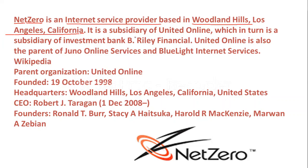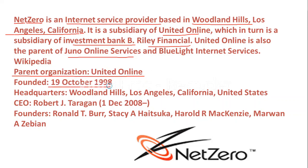Net Zero is based in California. It is a subsidiary of United Online, which in turn is a subsidiary of Investment Bank B. Relay Financial. United Online is also the parent of Juno Online Services. The parent organization is United Online, and Net Zero was founded on 19 October 1998. The headquarter is in the United States, and the CEO of Net Zero is Robert J. Taragan.